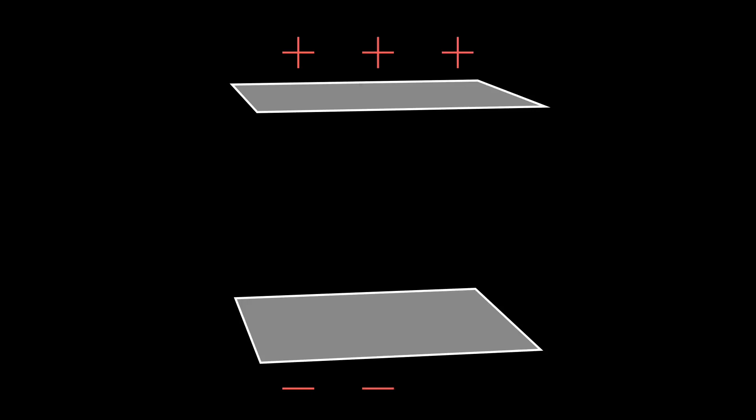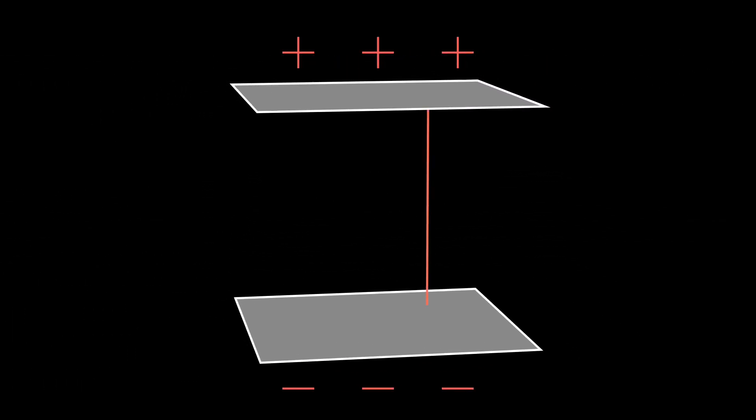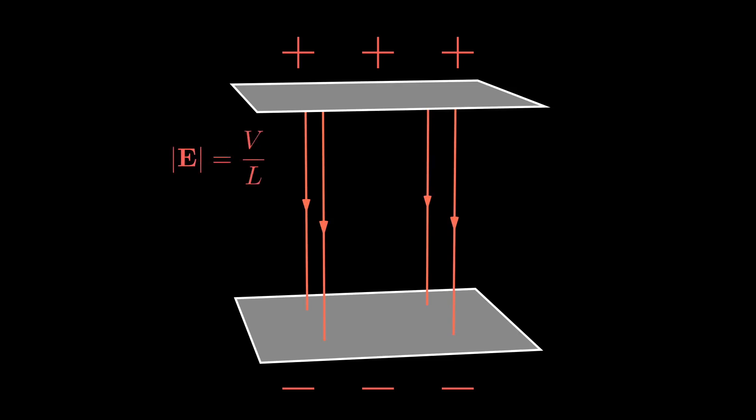We're going to start with a parallel plate capacitor, which is just two big metal plates charged with opposite electric charges. For simplicity, we'll assume the plates extend infinitely outwards. The electric field between two charged plates is uniform everywhere in the space between the plates. It points perpendicularly from the positive plate to the negative one, and has a magnitude of the voltage difference between the plates — which we'll call V — divided by the distance between the plates, which we'll call L. Let's keep these plates charged with a battery so that V stays constant.